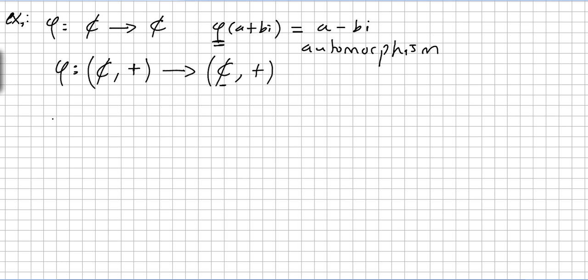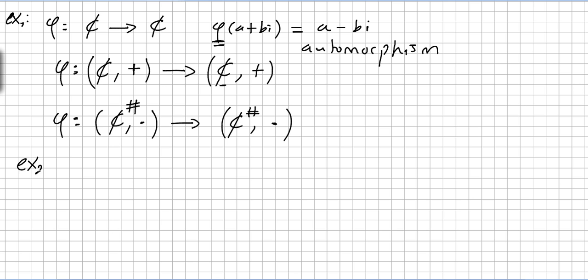Similarly, if we take the non-zero complex numbers under multiplication, the same map phi(a + bi) = a − bi from the non-zero complex numbers into the non-zero complex numbers under multiplication will also be an automorphism.